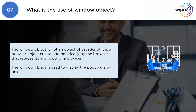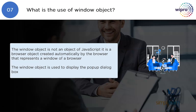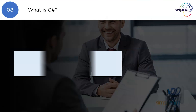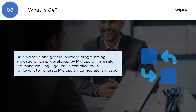What is the use of the window object? The window object is not an object of JavaScript — it is a browser object created automatically by the browser that represents a window of the browser. The window object is used to display pop-up dialog boxes.